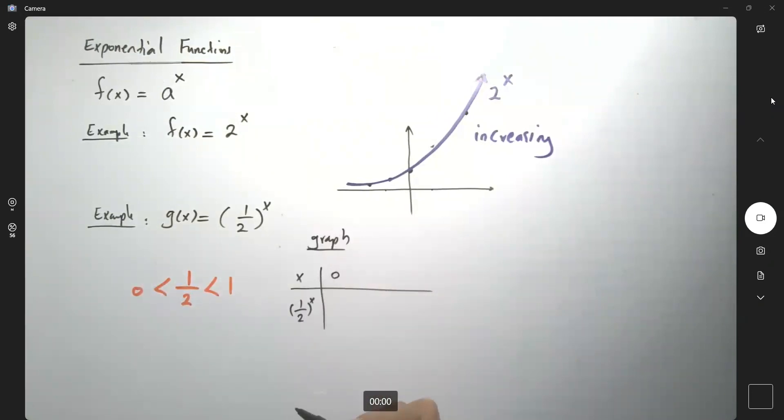So if x equals 0, you have a number raised to power 0, which is 1. If x is 1, you get a half. If x is negative 1, you get (1/2)^(-1) or 2. So remember that.